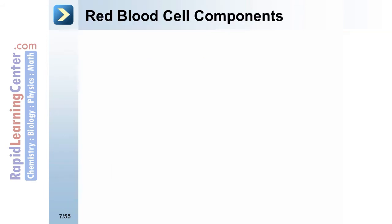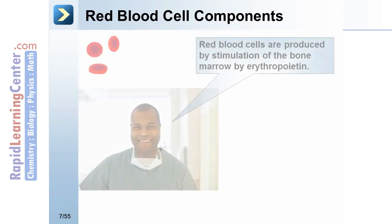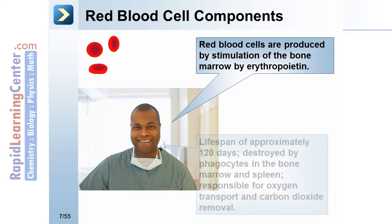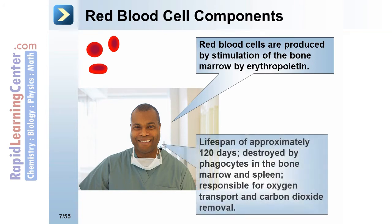Red blood cells are produced by stimulation of the bone marrow by erythropoietin. They have a lifespan of approximately 120 days and are destroyed by phagocytes in the bone marrow and spleen. They are responsible for oxygen transport and carbon dioxide removal.